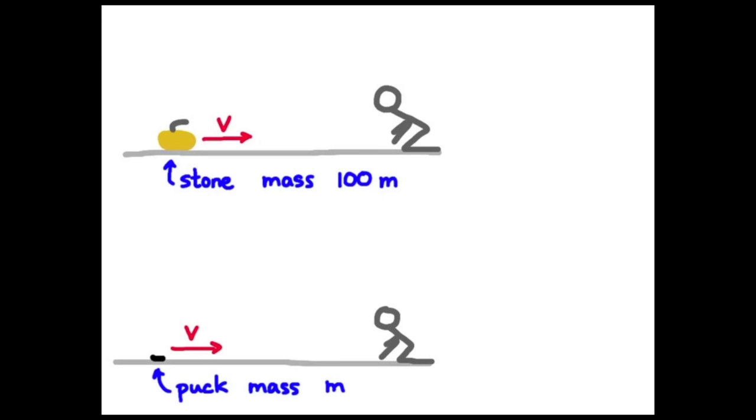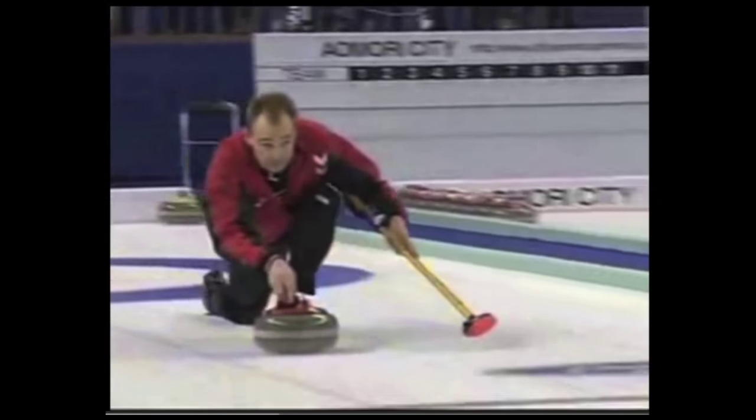To illustrate what inertia is, we're going to look at two examples here. Two objects sliding along an ice surface. One is a hockey puck of mass M. And the other is a curling stone of mass 100 M. Hockey puck or curling stone traveling at the same velocity. Which one's most difficult to bring to a stop? Our curling stone.